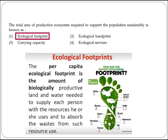The next question states that the total area of productive ecosystem required to support a population sustainably is known as the ecological footprint. Option 1 is the right answer.